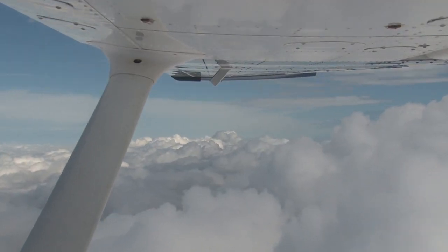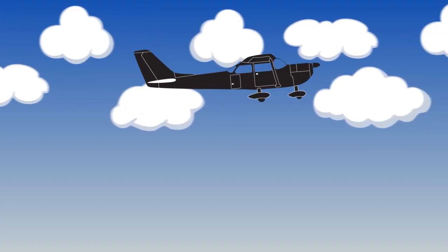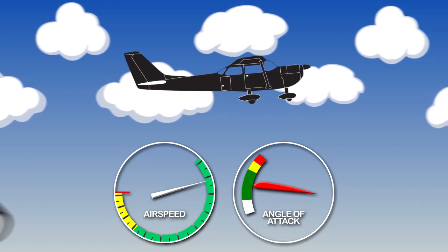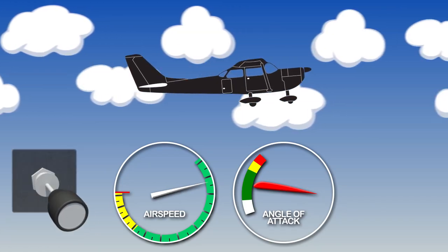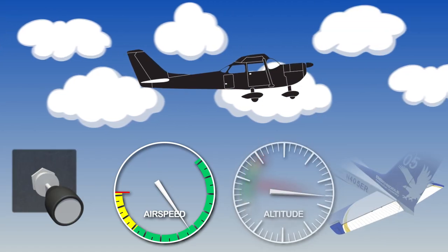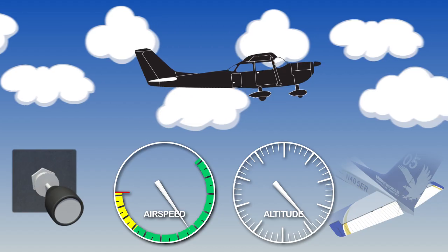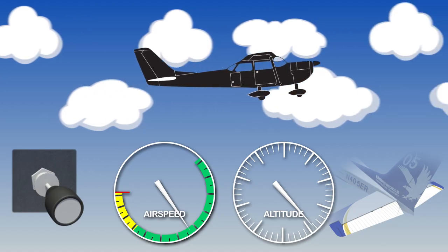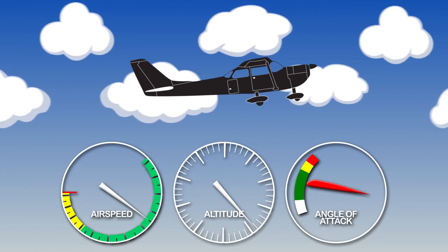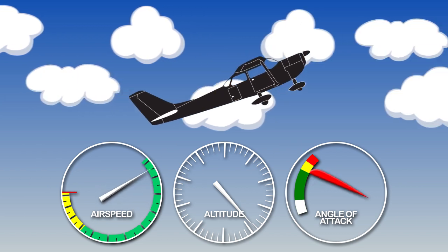If one wing is higher than the other, the airplane is turning. If the plane starts to climb, the pitch attitude is too high and should be lowered. If you are losing altitude, the plane's pitch is too low and should be raised. Since lift increases with airspeed, the slower you are flying, the more you have to pitch up to maintain your altitude.